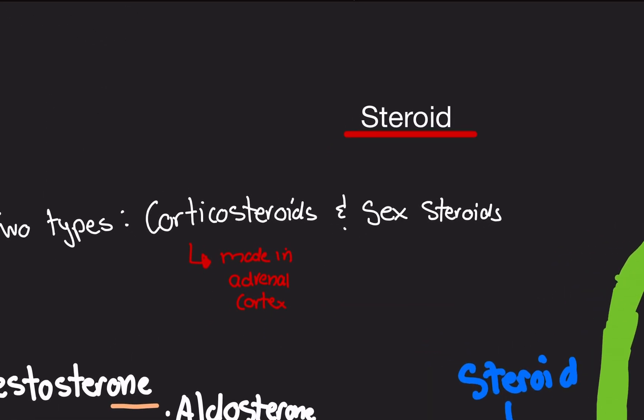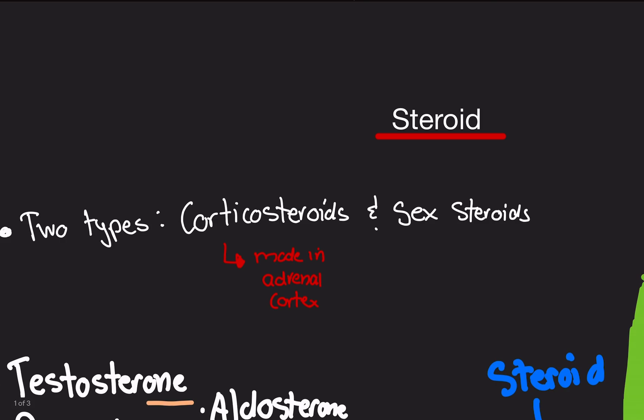There are two types of steroid hormones: corticosteroids and sex steroids. Corticosteroids are made in the adrenal cortex or your adrenal glands. That's how the name comes from, the cortex, adrenal cortex, and cortical. Sex steroids are made in the gonads, which are basically your sex organs.